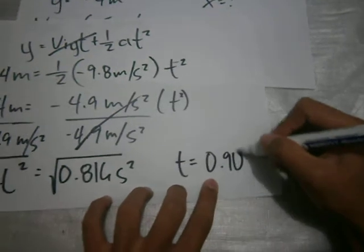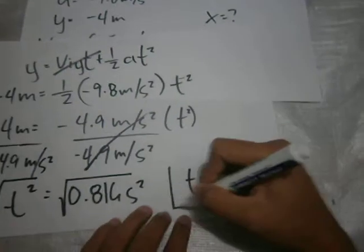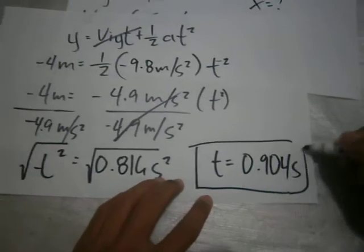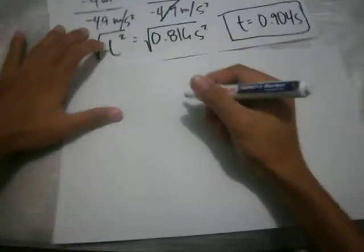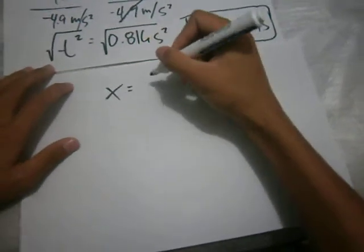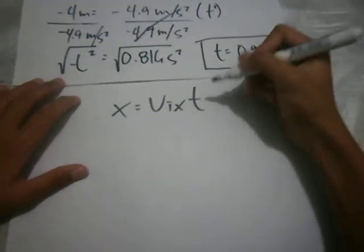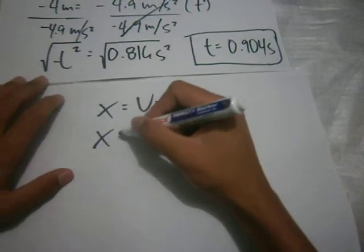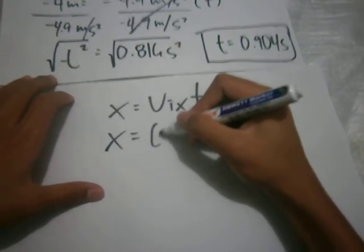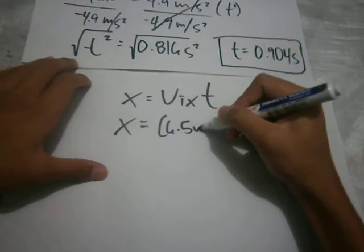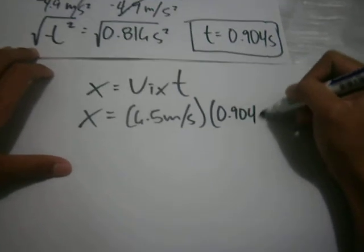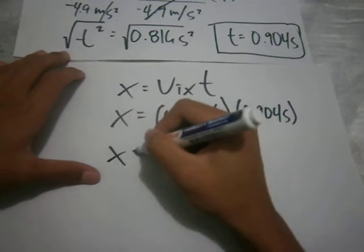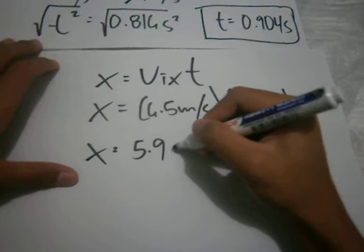Taking the square root, t equals 0.904 seconds. So this is our t. Next we will find x. The formula is x equals initial velocity x times t. X equals 6.5 meters per second times 0.904 seconds, so it equals 5.9 meters.